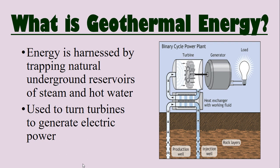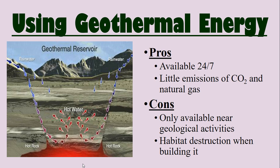The next type of energy is geothermal energy. This is energy harnessed by trapping natural underground reservoirs of steam and hot water, which we use to turn a turbine that generates electrical power. One good place this can happen is anywhere with natural geothermal areas — near volcanoes, near geysers, those types of geological structures. The pros: it's available 24/7, there's little CO2 emissions, and only a little emission of natural gas.